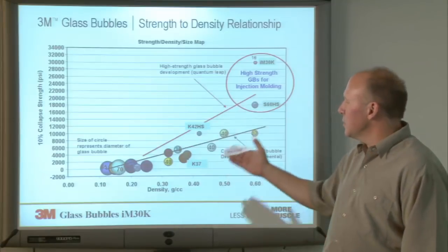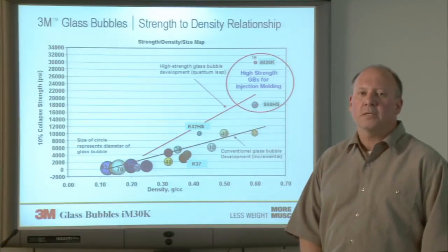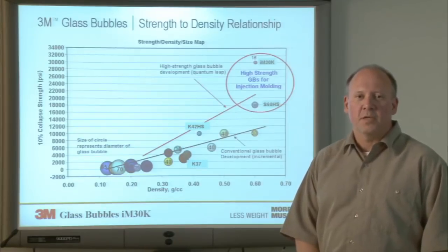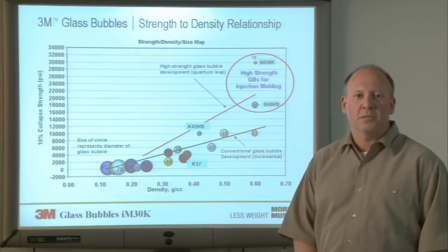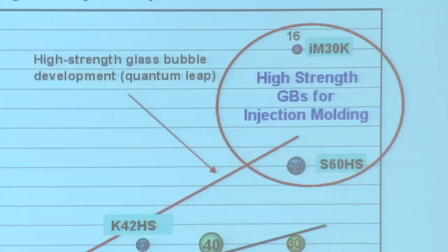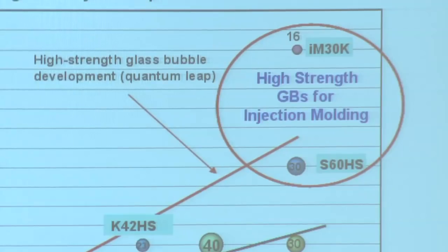There's also a red trend line that shows newer high-strength glass bubble products that we can make through new developments and manipulations in our process and composition. What we've done here is we are able to make higher strength glass bubbles at the same density as our older commercial products.